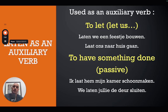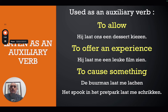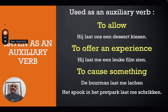The next auxiliary meaning is 'to allow.' For example, 'hij laat ons een dessert kiezen' — 'he allows us to choose a dessert.' As you can see, 'laat' is the auxiliary verb at the beginning, and 'kiezen' is the main verb at the end of the sentence.